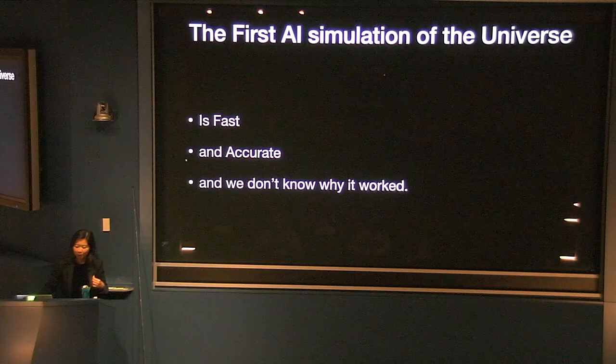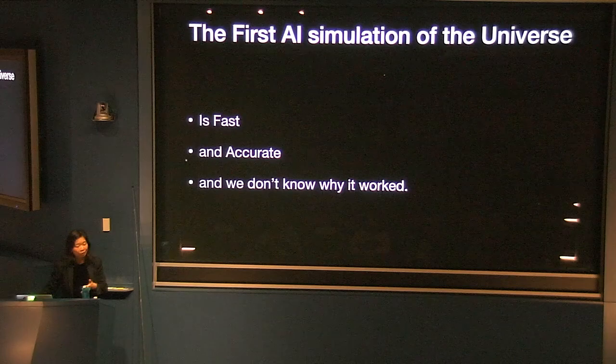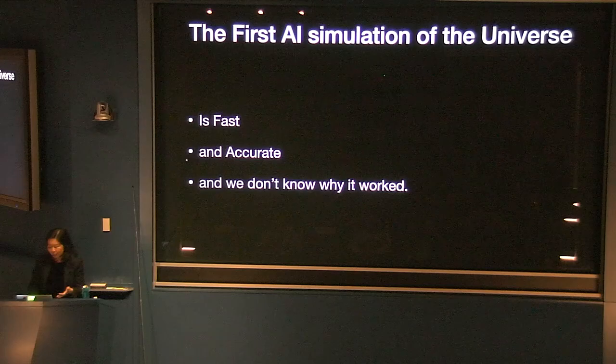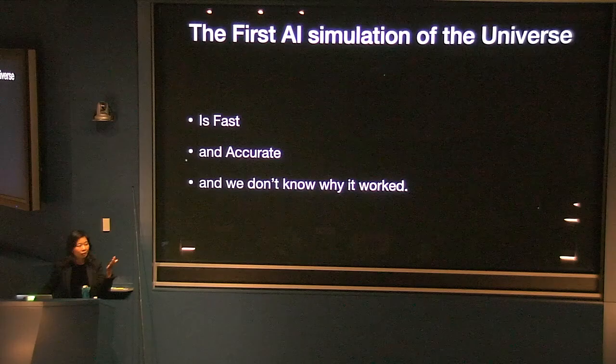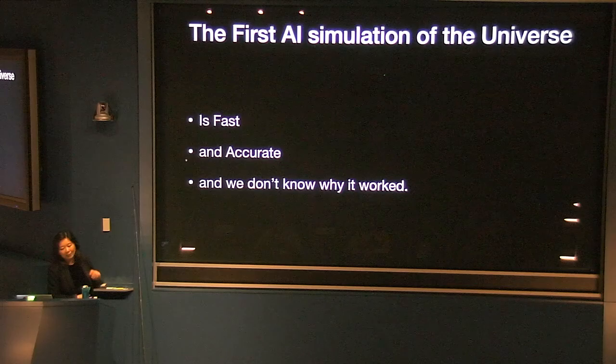I'm going to talk about why it is important to get these simulations first, and then talk about how machine learning — these deep learning techniques that people think might lead us to artificial general intelligence — are used to make these universes really, really fast.